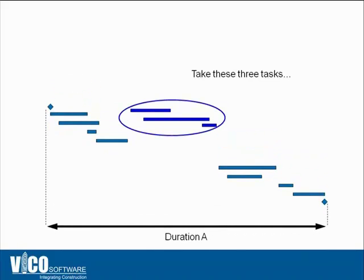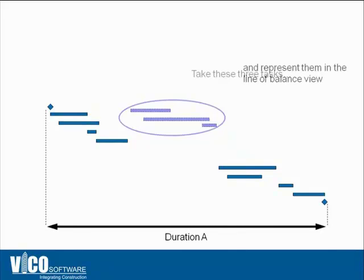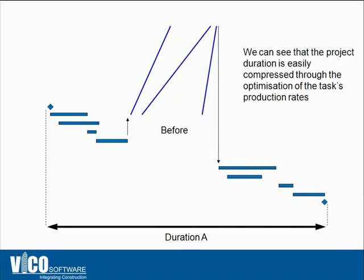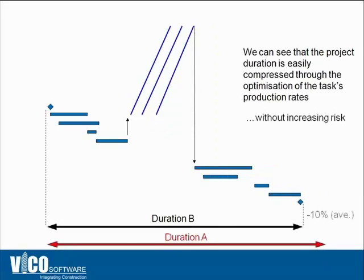When you look at a Gantt chart schedule and transform three activities into Flowline, you can see that the task in the middle has lower productivity and slower utilization of locations than the activities at the beginning and end. By synchronizing the production rate and utilizing locations at the same pace, customers experience approximately 10% compression of the schedule. Using this additional dimension of locations together with productivity, you can optimize the schedule and compress it by at least 10% on average.